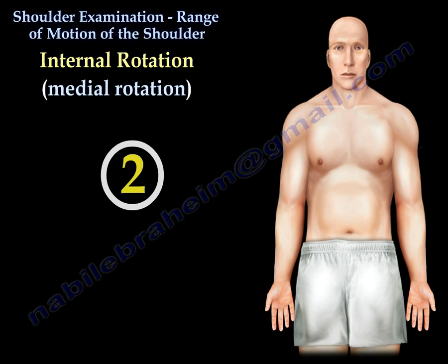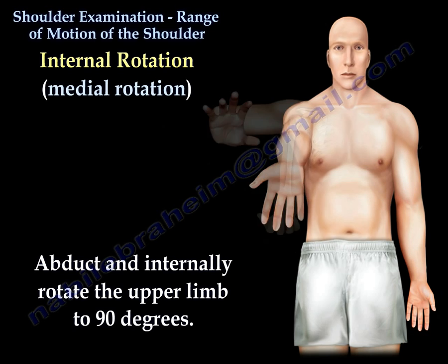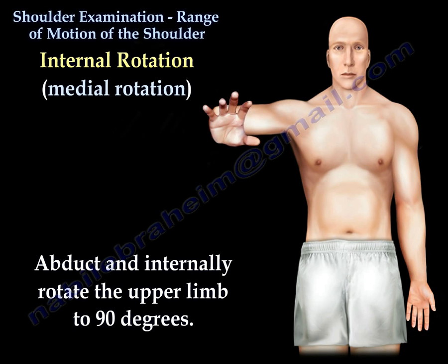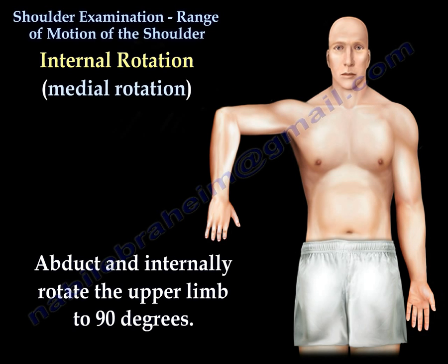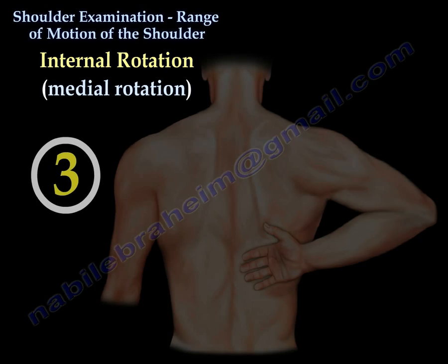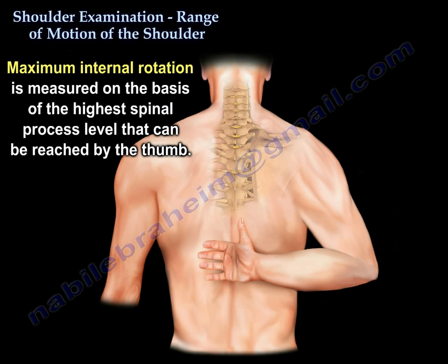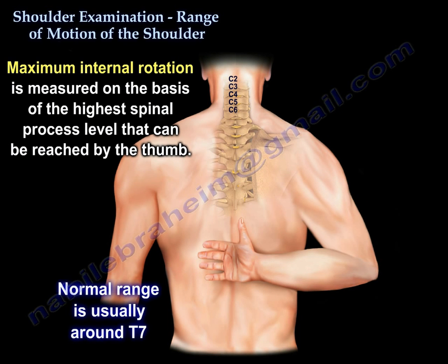The second way to check internal rotation is done by abducting and internally rotating the upper limb to 90 degrees. With the third way to check internal rotation, the maximum internal rotation is measured on the basis of the highest spinal process level that can be reached by the thumb.